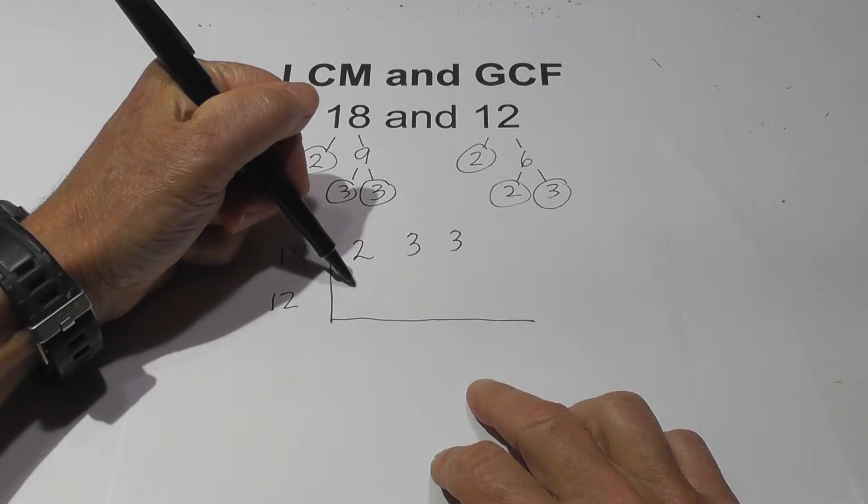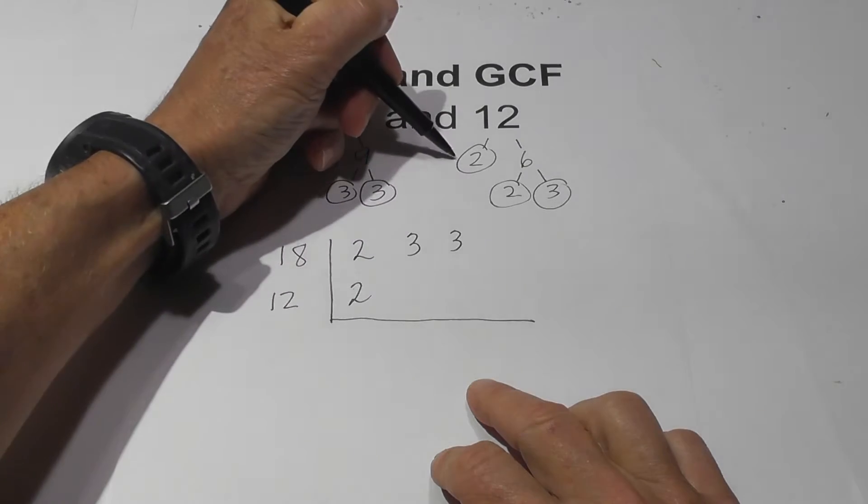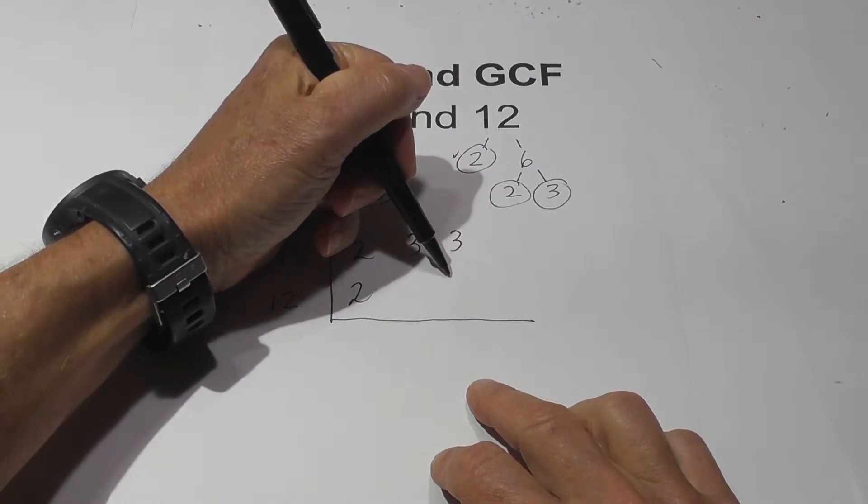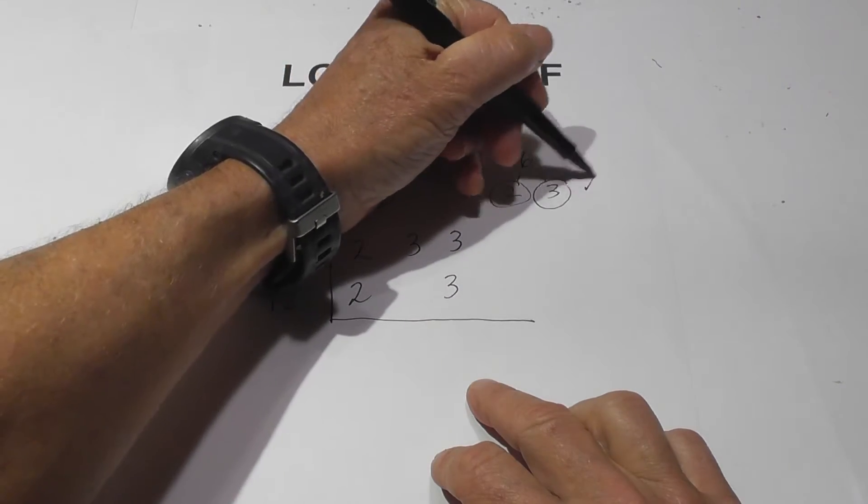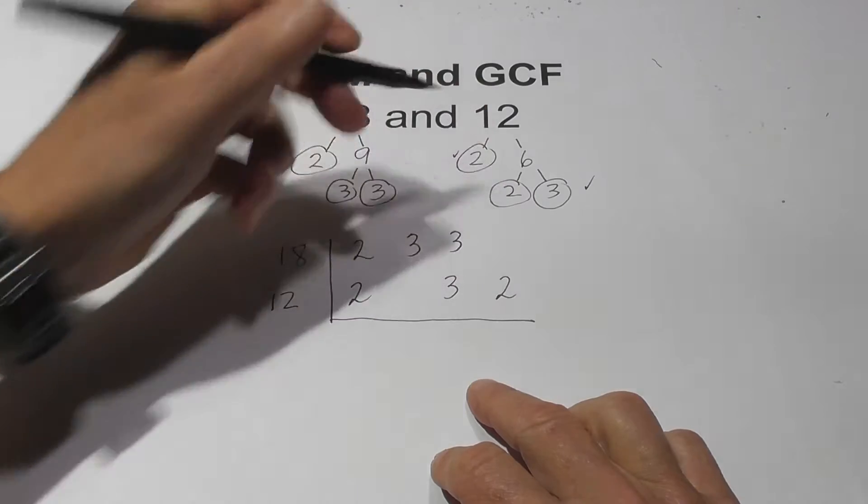Now for the 12 I'm going to write the 2. I'll put a check by it. I'm going to skip to the 3 and then I'm going to write a 2 here.